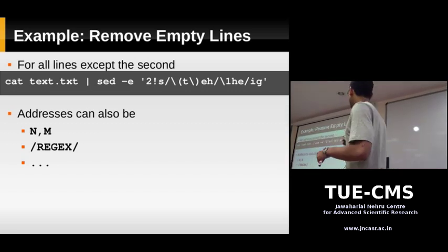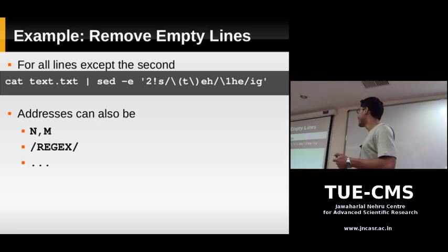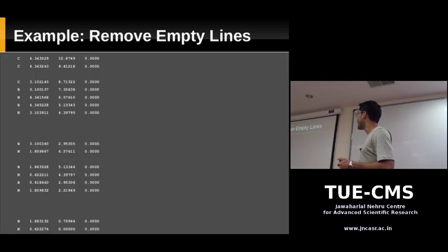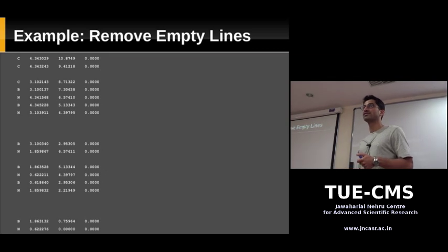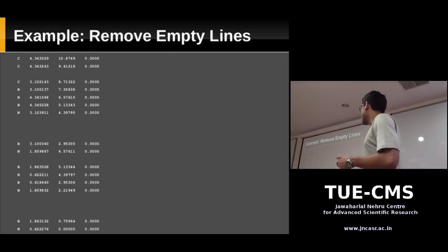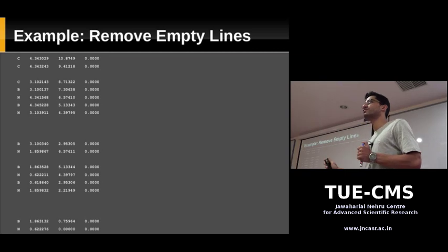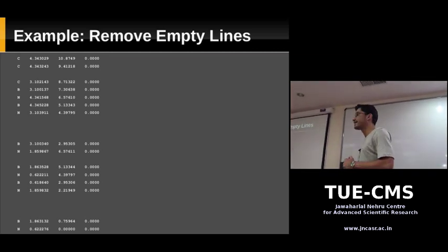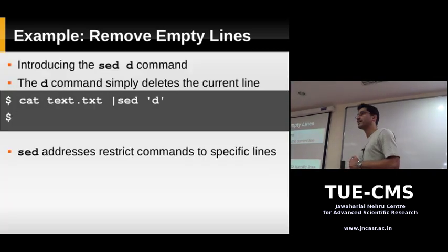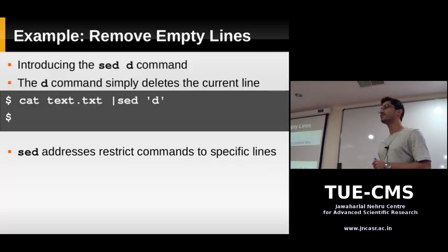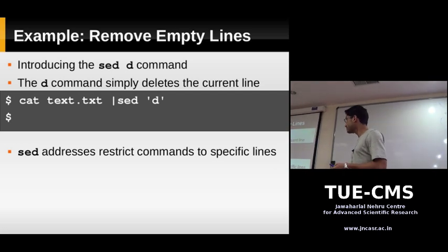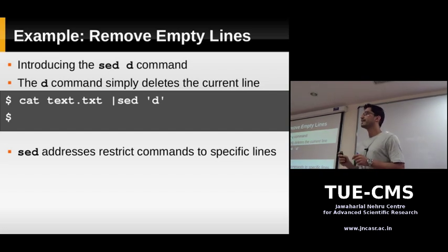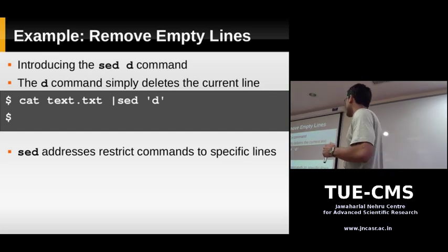Just to remind you where we stopped yesterday — what we needed to do was delete all the blank lines from this file. We had some blank lines and we want to write a sed script that finds these blank lines and removes them. We looked at the D command. The D command for sed just deletes a line. We need to restrict the D command only to the lines that are empty.